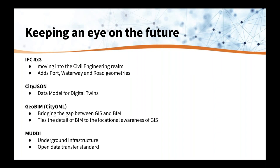We're also keeping an eye on future formats. I've already mentioned IFC 4x3 — still in development, but we've updated FME in the latest beta to read the latest iteration. There's city.json, which is like a JSON-based version of city.gml — really useful as a data model for digital twins, flexible, and easy to read in any application. There's the GeoBIM extension to city.gml, designed to merge the BIM and GIS worlds together. And then there's MUDDI — an initiative for underground infrastructure, trying to build standards around how underground infrastructure data can be sent between applications. We try to keep an eye on these standards and make sure we support them as they come out.